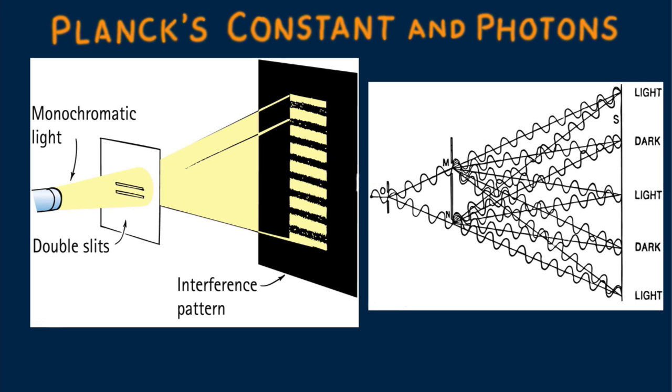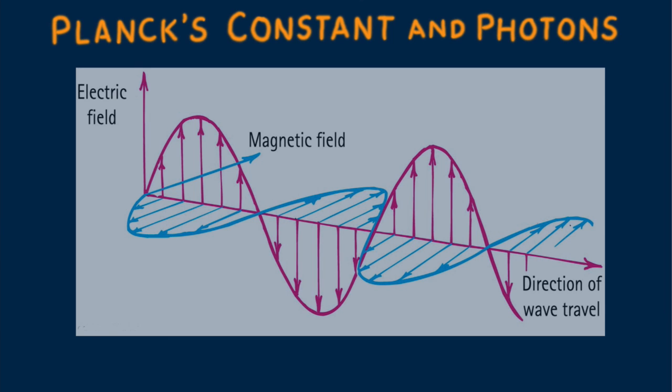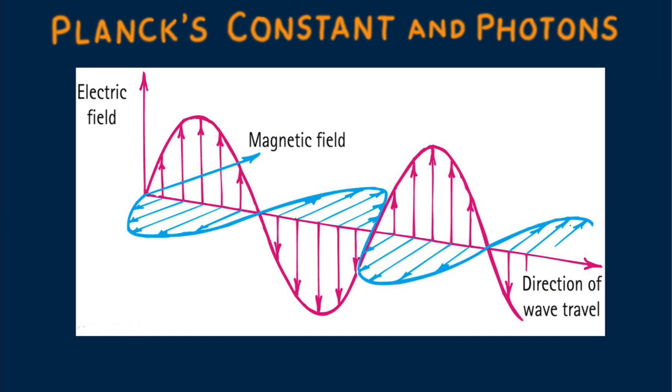This view was reinforced in 1865 by Maxwell's prediction that light carries energy in oscillating electric and magnetic fields. A little more than 20 years later, Heinrich Hertz used sparking electric circuits to demonstrate the reality of electromagnetic waves in the radio frequency range.